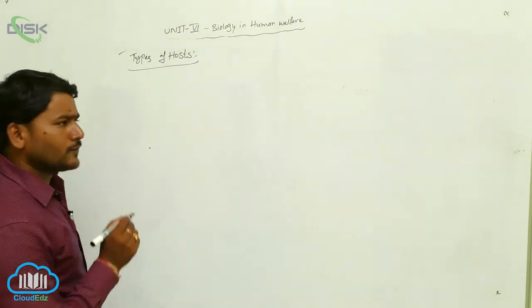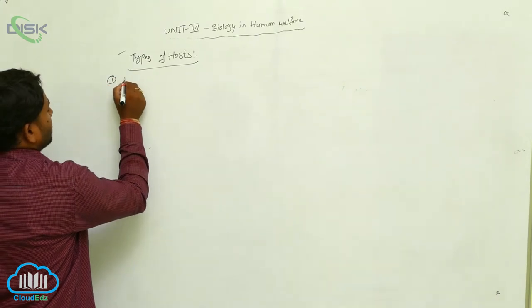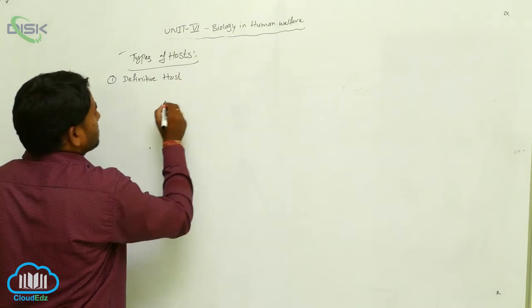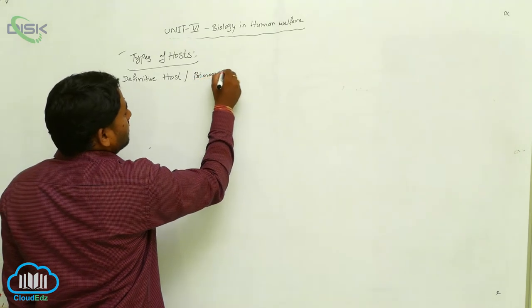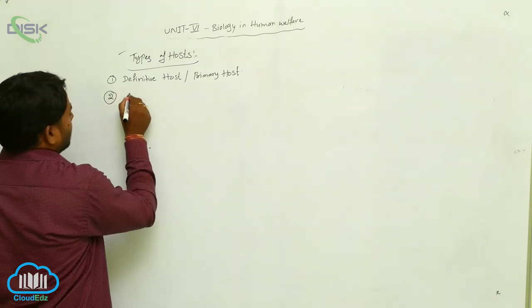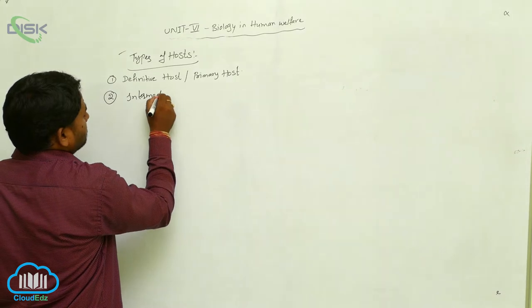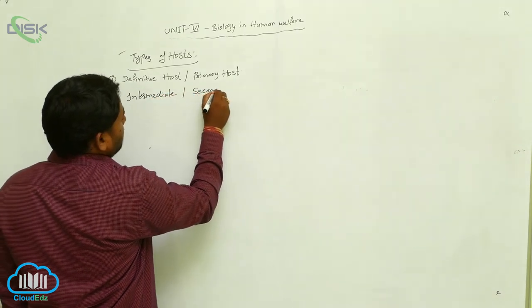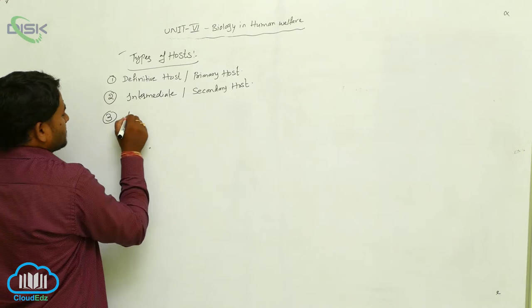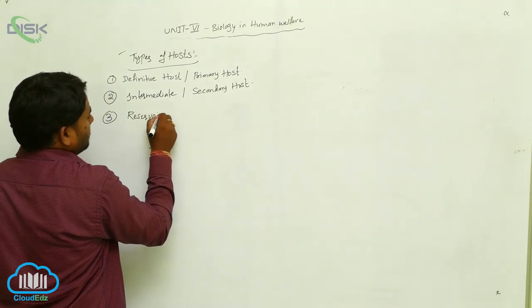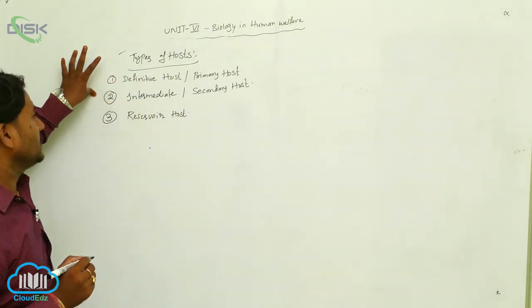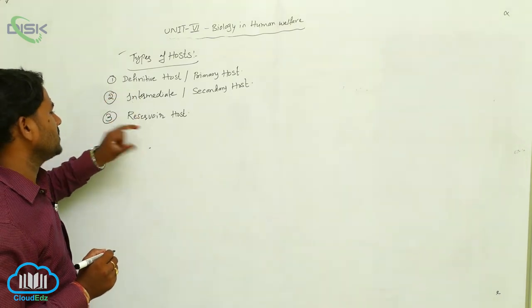Here we have three types of hosts. One is definitive host, also known as primary host. Next is intermediate host, also called secondary host. Third one is reservoir host. So, three types of hosts: definitive host, intermediate host, reservoir host.